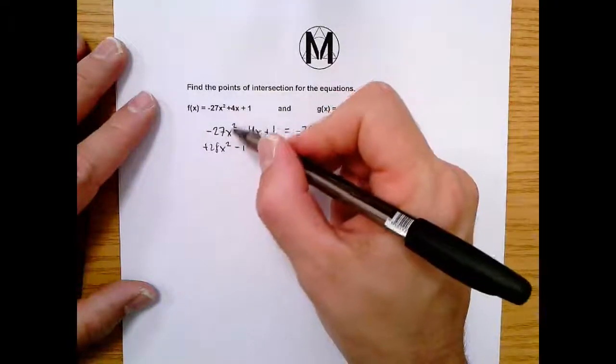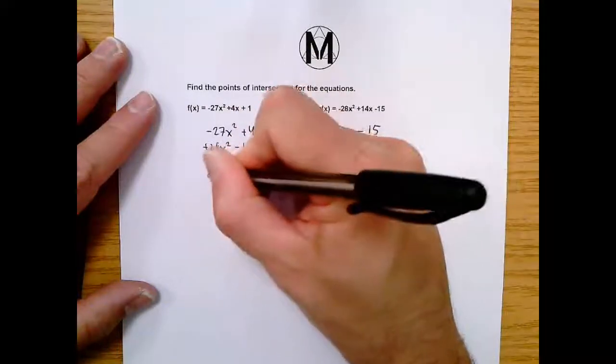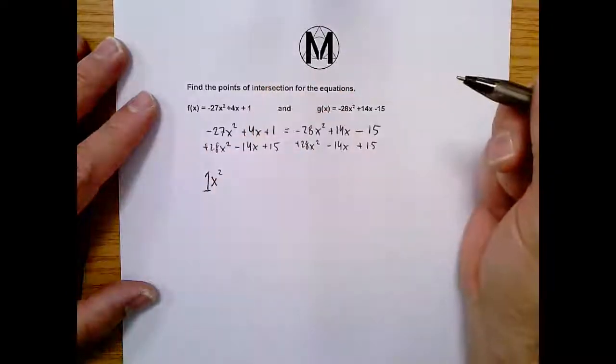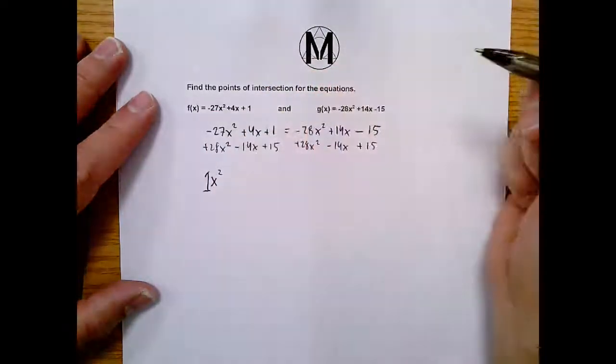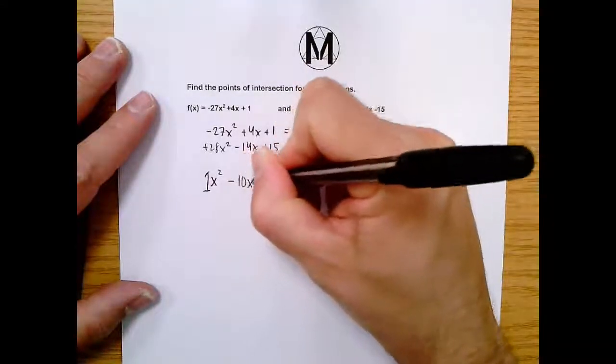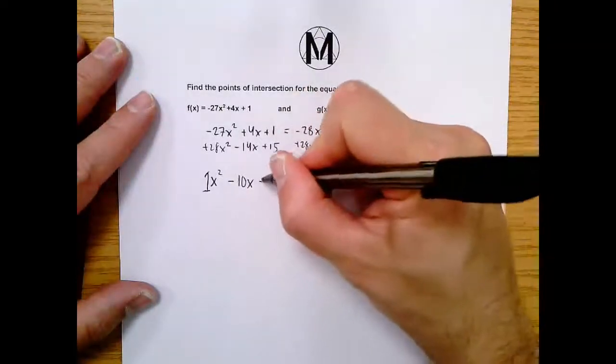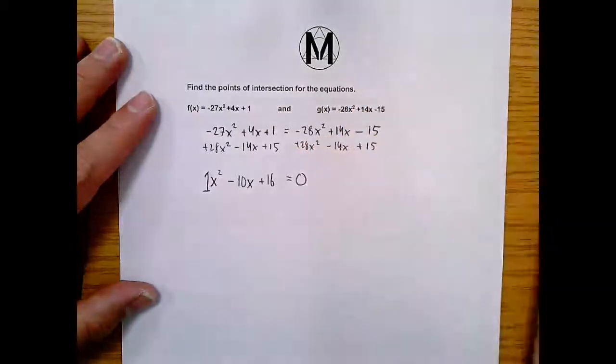So what is -27x² + 28x²? Well, that is just 1x². We can put the 1 there if you want. 4x - 14x is -10x. And 1 + 15 is 16. And these all canceled into 0, so now, voila, there you go.